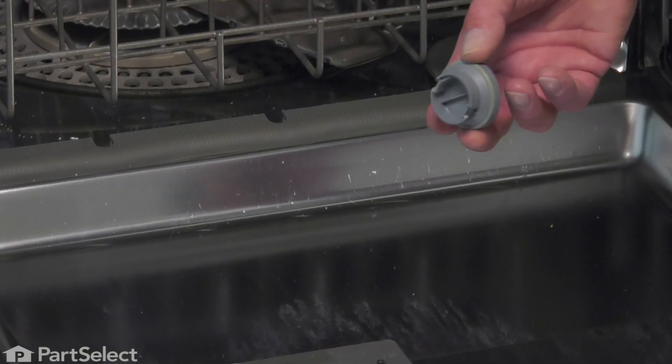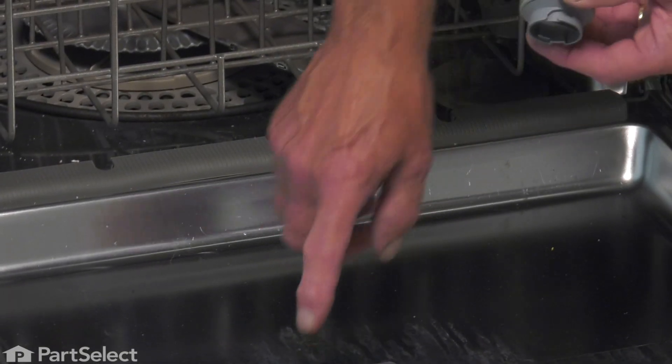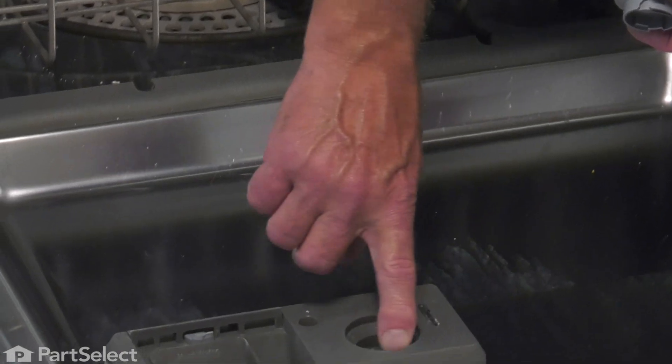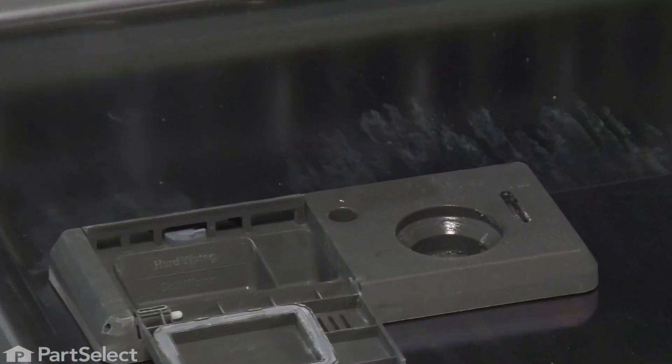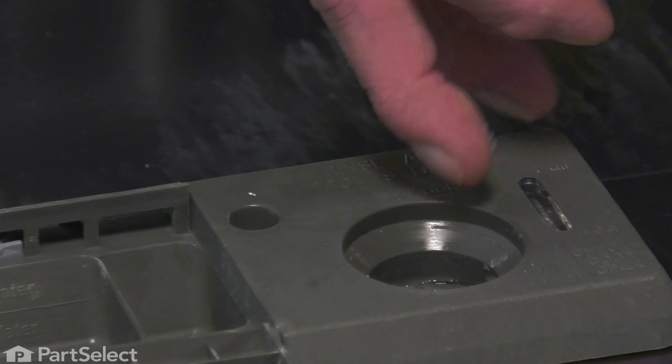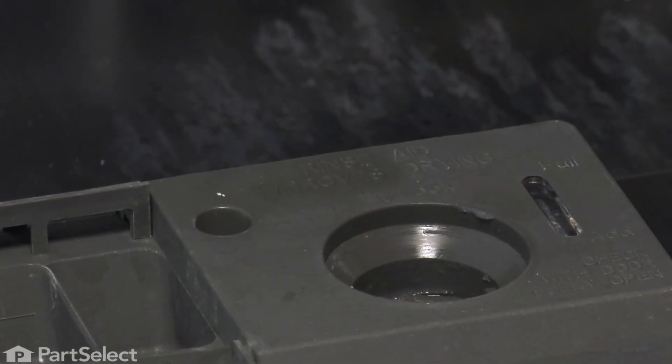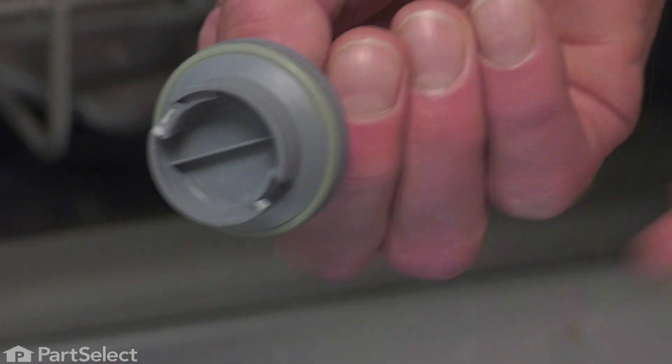Before we install that new one, we want to make sure that the inner edge on the opening of that dispenser is clear of any buildup of detergent or debris. Make sure that the O-ring on the new dispenser cap is in place.